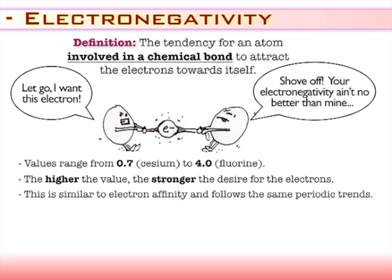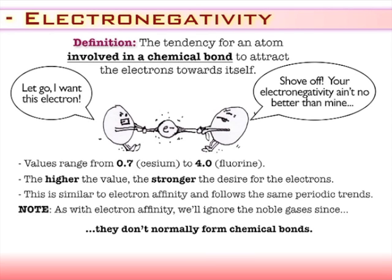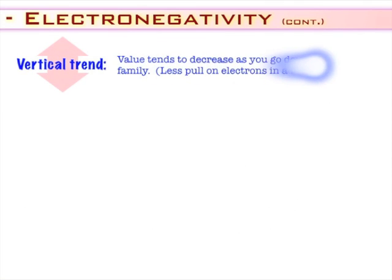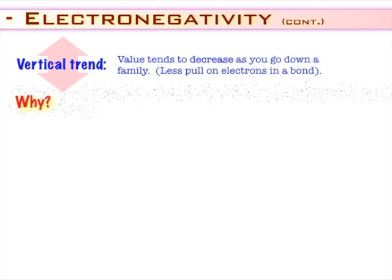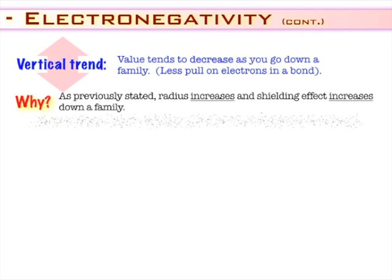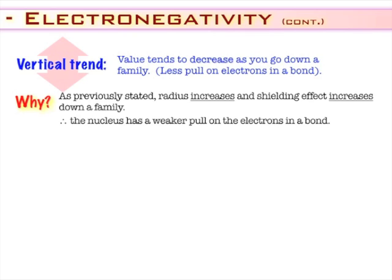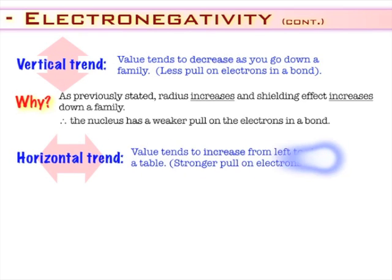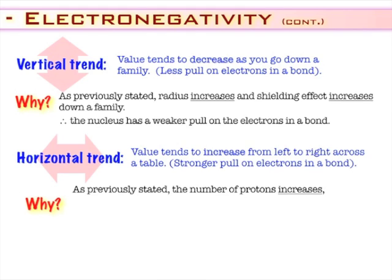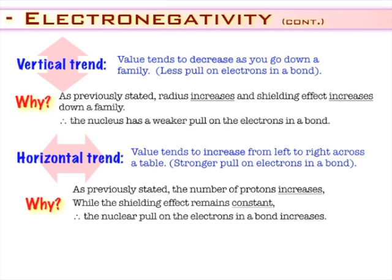Electronegativity follows the same trends as electron affinity. We're going to ignore the noble gases because they don't like to form bonds anyway. As you go down a family, the radius gets bigger, electrons are farther away, and so there's going to be a weaker pull — bigger elements have weaker electronegativity values. Going left to right, the radius gets smaller, meaning new electrons can get closer to the nucleus and are pulled in tighter, so you'd expect higher electronegativity values. The top right corner, excluding noble gases, has the strongest electronegativity values.